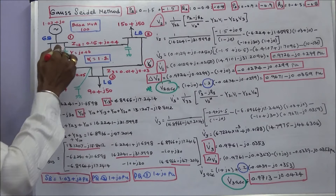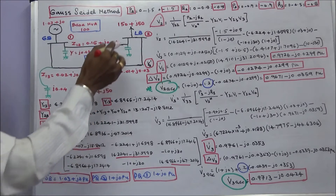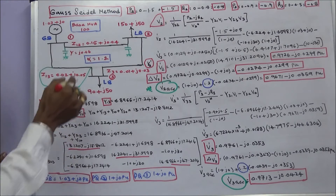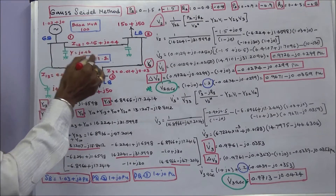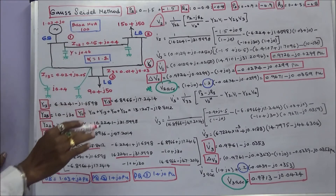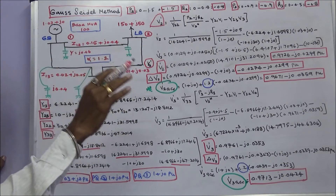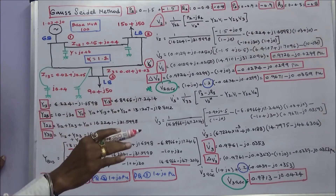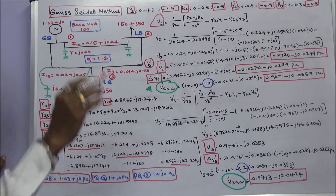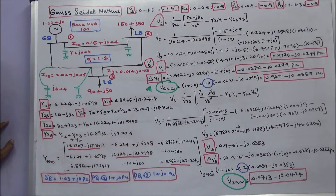Line series impedances are given, and half line charging impedances are given. The acceleration factor alpha is equal to 1.2, and the base MVA is equal to 100. The question asks us to calculate the line losses and the slack bus power. The first step is to form the Y-bus matrix.